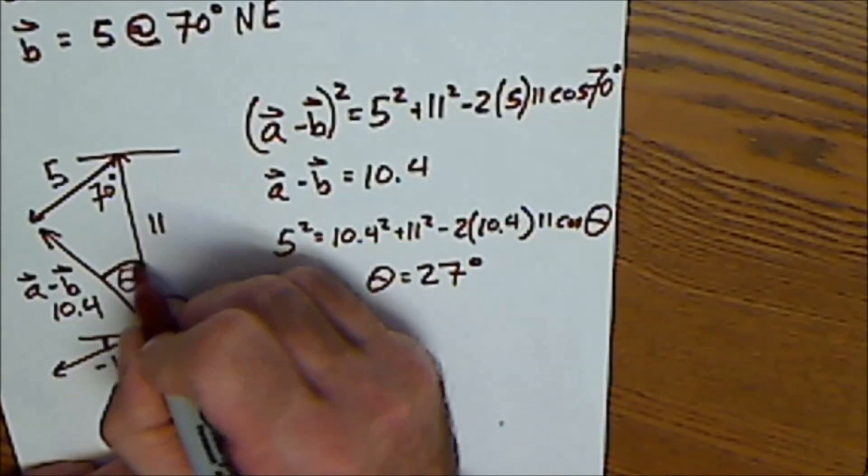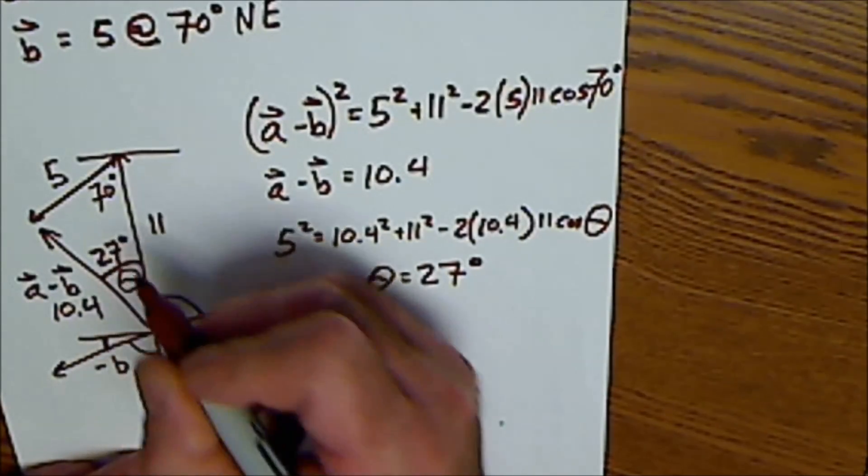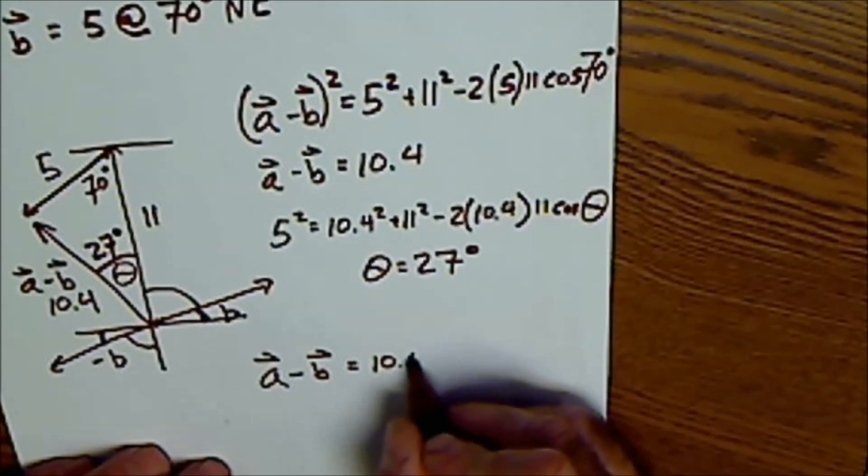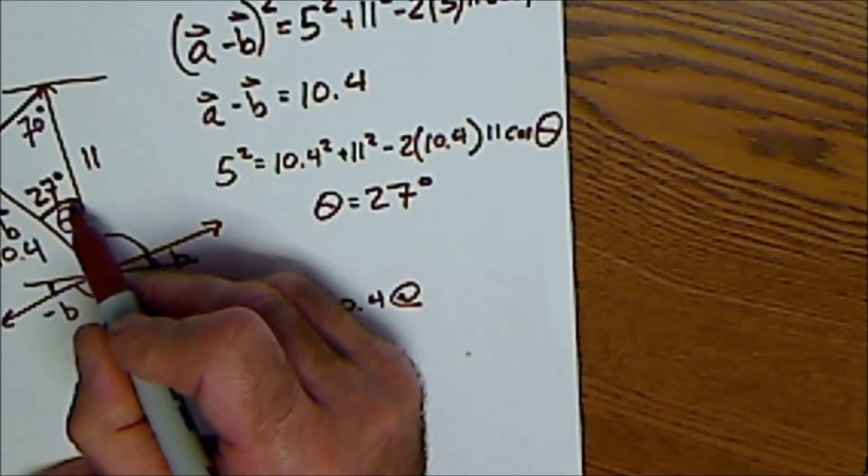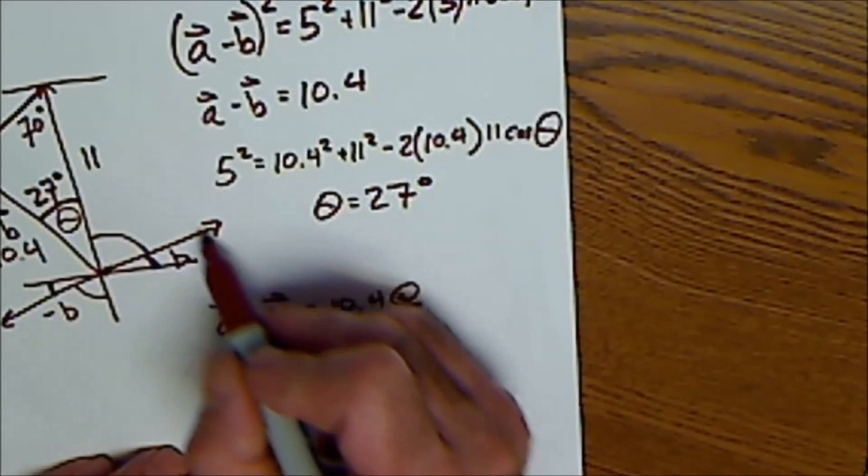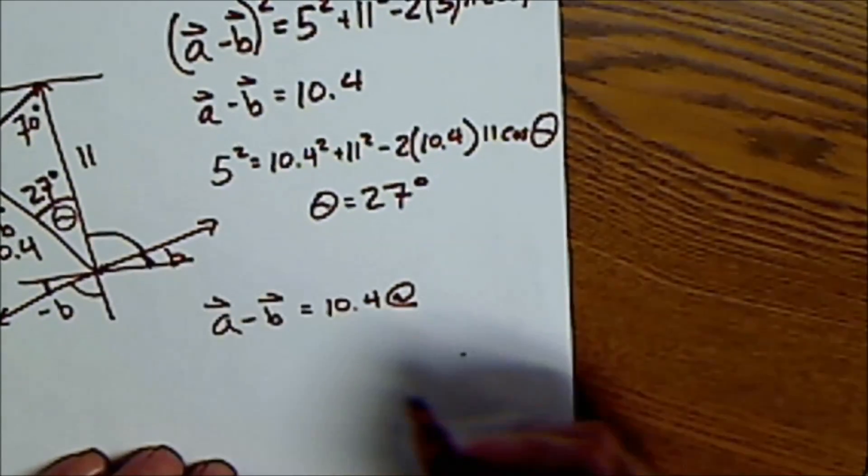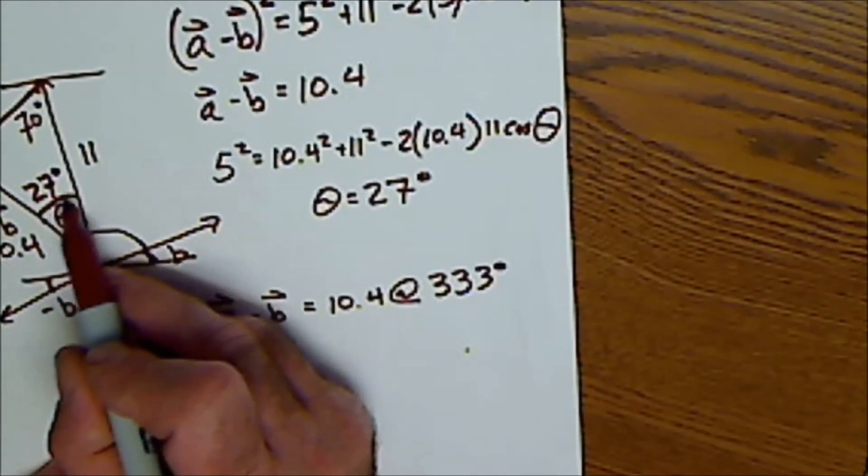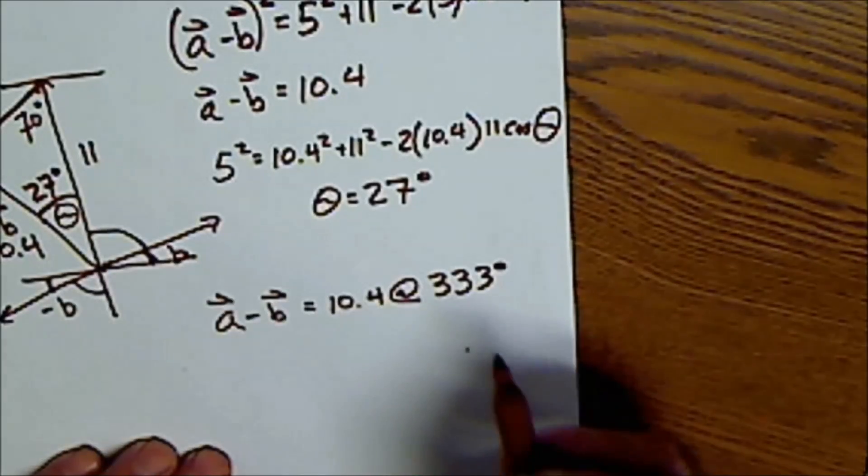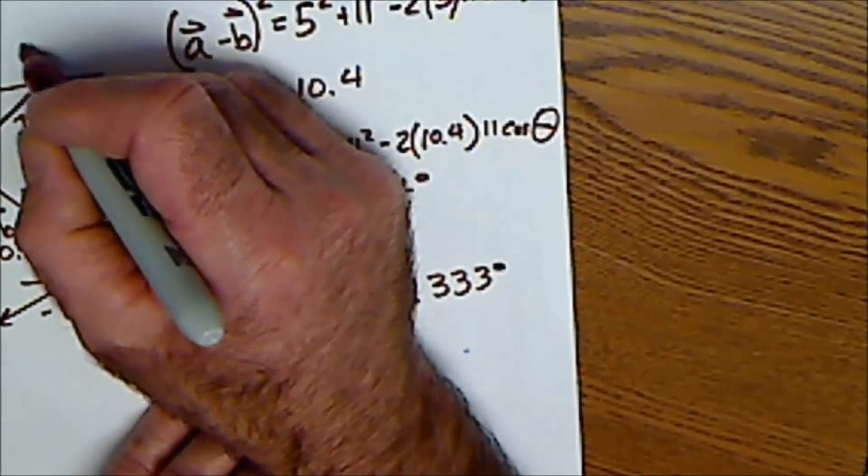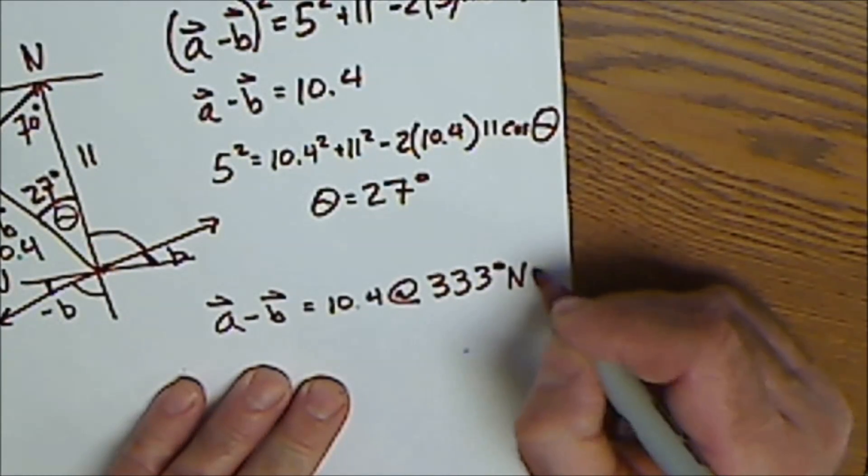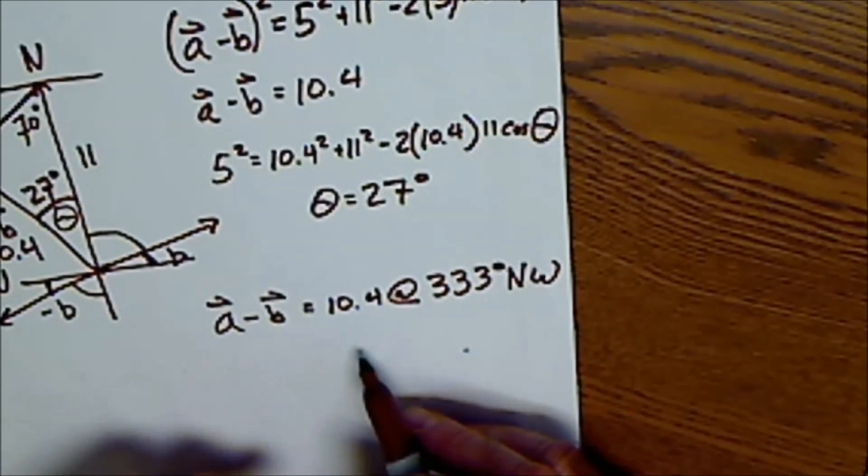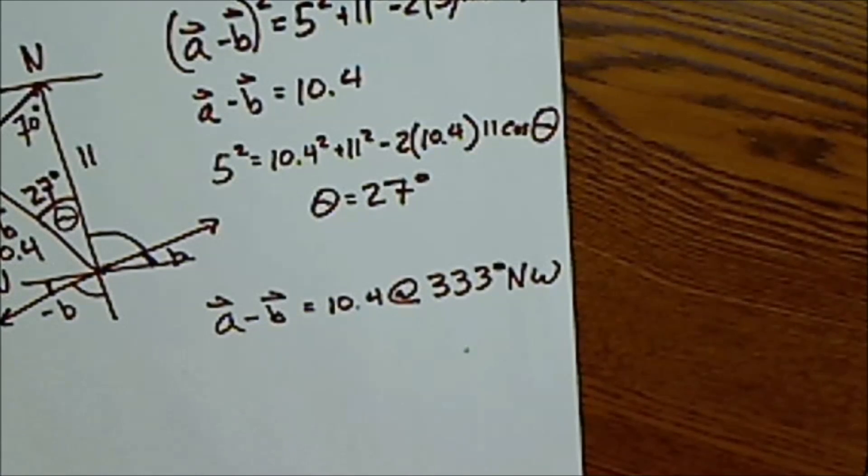So this is 27 degrees right here. So my answer of A minus B is 10.4 units at an angle of, well, if it's 27 this direction, it has to be 333 off the north. 333 degrees plus 27 gives me 360. So that's 333 degrees into the northwest. So that's how I do A minus B. The problem is given as a bearing off the north. My answers are bearing off the north.